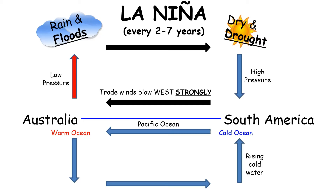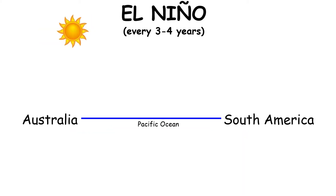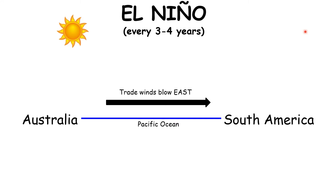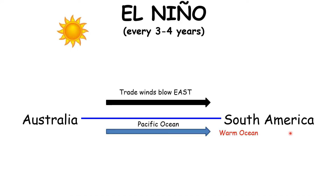That is La Niña — similar to normal conditions but more extreme, occurring every two to seven years. El Niño is the opposite of La Niña. Every three to four years the trade winds might slow down or even reverse direction, moving to the east. This will move the surface waters of the Pacific Ocean to the east as well, and because the sun has been heating these surface waters, a warm ocean is pushed over towards South America.